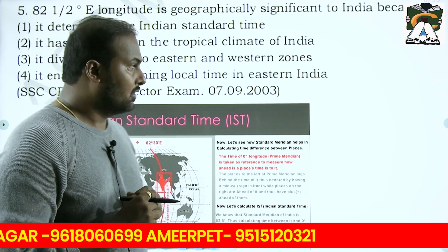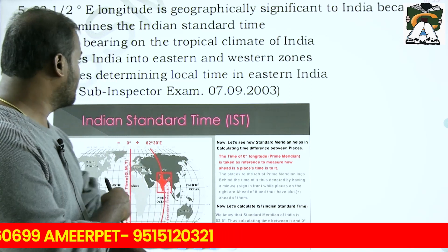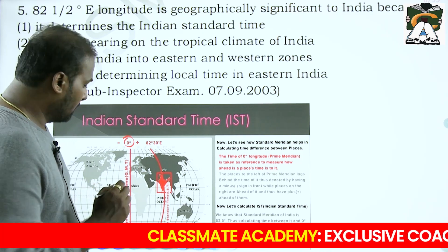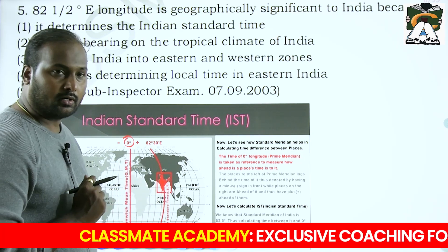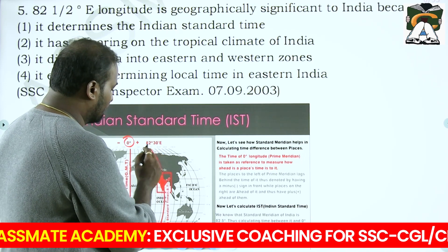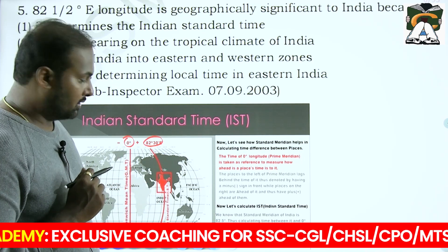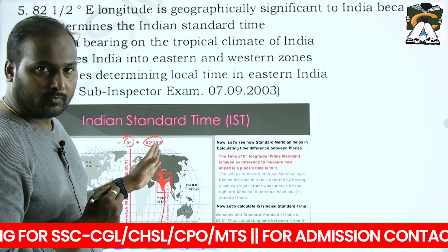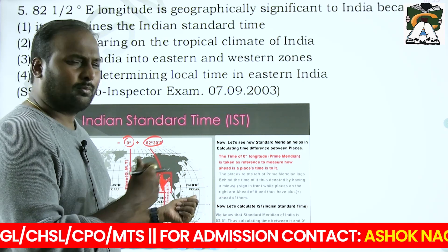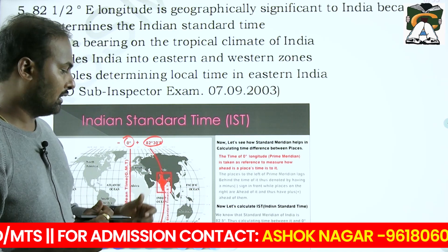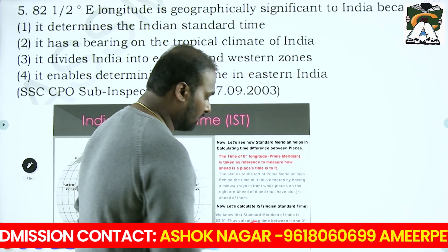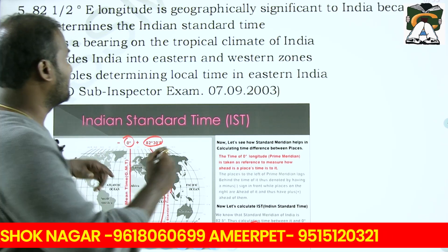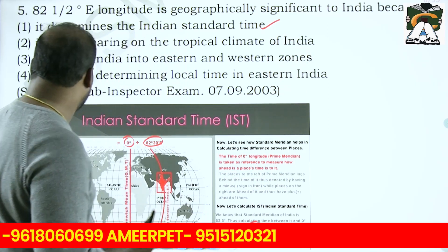'Why is 82.5 degrees East longitude geographically significant?' We have the Greenwich Meridian at zero degrees longitude. East of this, the Indian Standard Time is calculated at 82 degrees 30 minutes East. The difference is 82.5 degrees, multiply by 4 minutes per degree, you get 330 minutes which equals 5 hours 30 minutes. So this longitude determines the Indian Standard Time - your answer is Option A.